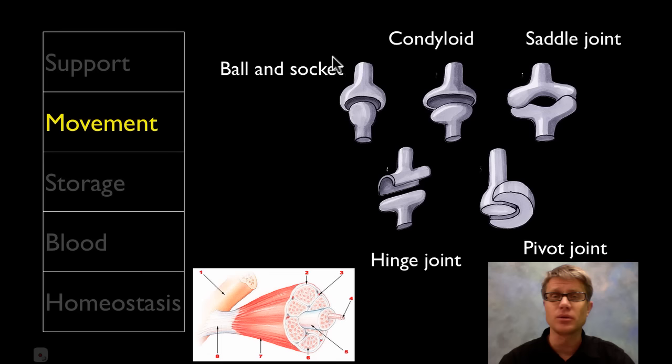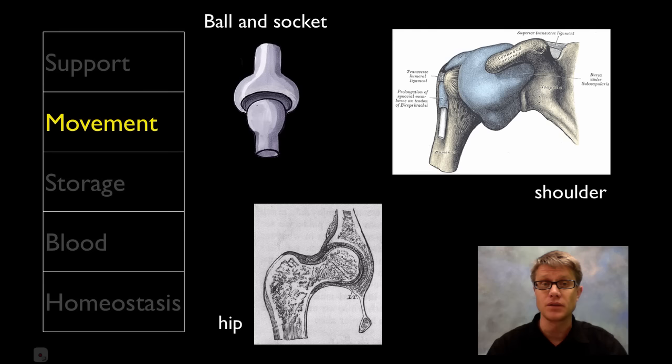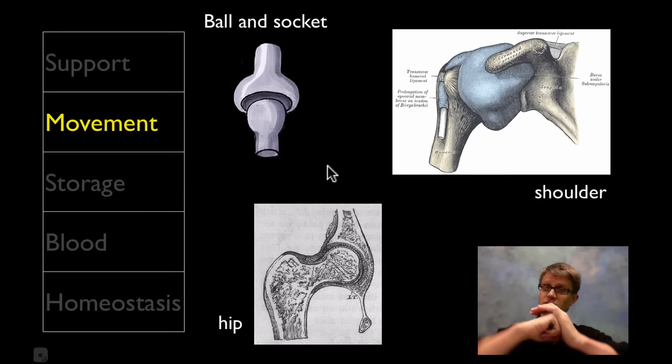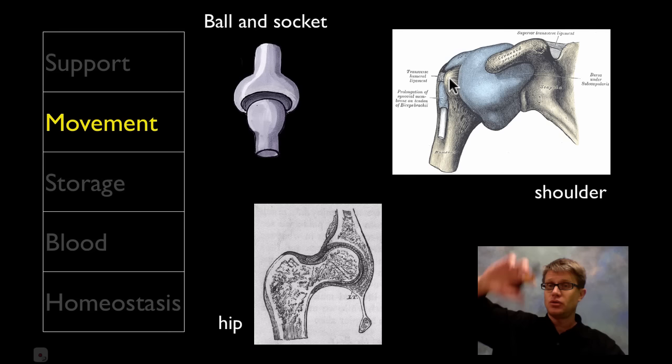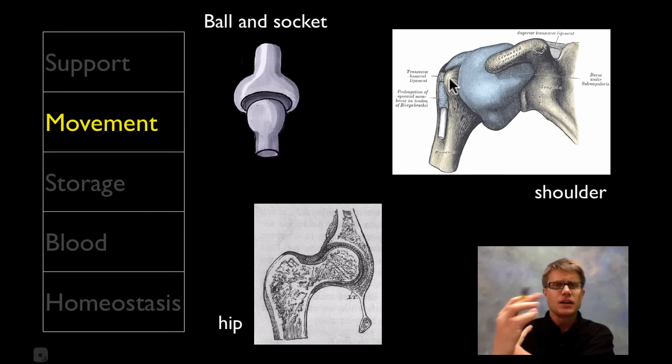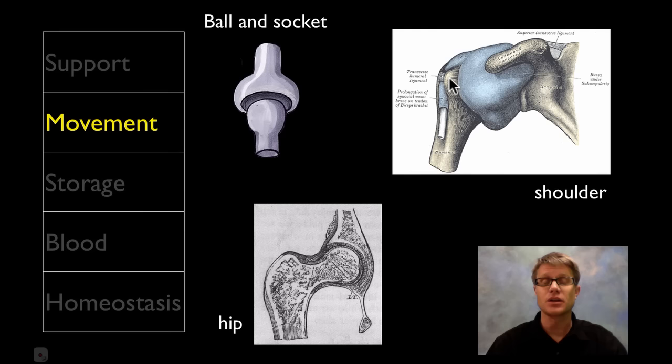There are five general types of joints and they each give us different movement: ball and socket, condyloid, saddle, hinge, and pivot joint. A ball and socket joint is basically a ball fitting inside a socket, giving us a huge amount of maneuverability. Two examples would be the hip joint and the shoulder joint. What's great is I have huge maneuverability in my shoulder, but think of all the ligaments holding that in place — there are a lot of things that can go wrong, which is why hip replacement is very common.